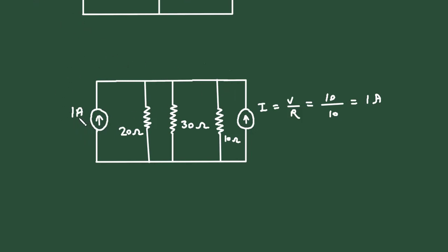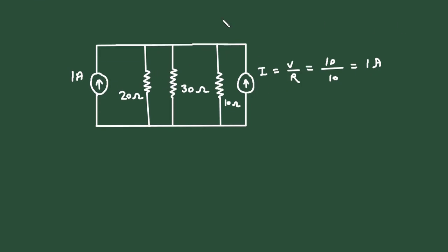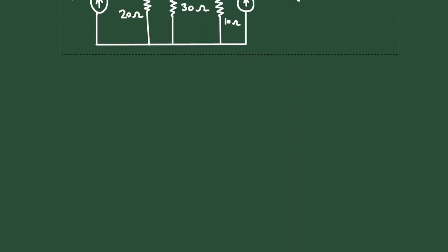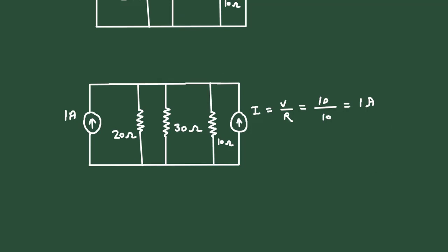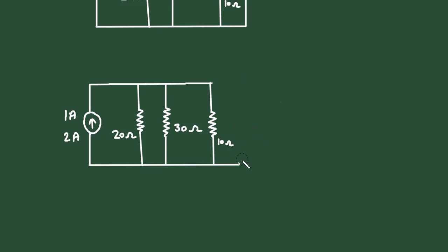Now here we can see 1 ampere and 1 ampere are connected in parallel, so they will get added. This 1 ampere and 1 ampere are connected in parallel, so it will be 1 plus 1 equals 2 ampere. Since the direction of both the currents was the same, that is why we are adding.